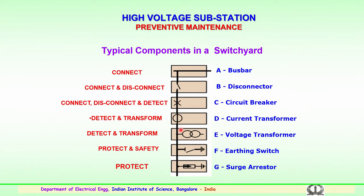Similarly, we have the earthing switch, which is used mainly for protection and also for safety aspects. In case of any equipment change in the substation, the earthing switch is kept open while the equipment is being attended. Finally, we have the lightning arrestor or surge arrestor, which is a very important component. It quenches surges — lightning or switching surges — and protects major equipment like transformers, circuit breakers, and other relays and controls in the substation.